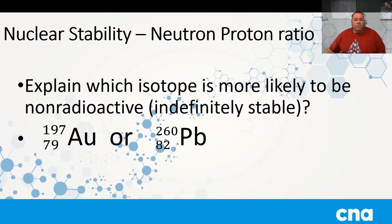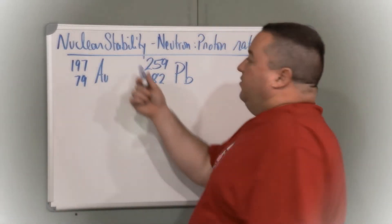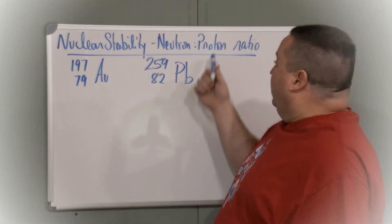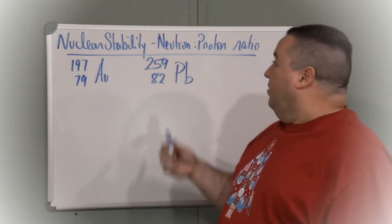This is another question about nuclear stability. Explain which isotope is more likely to be non-radioactive or indefinitely stable: gold 197 or lead 260? This is another example about nuclear stability, but this one we're talking about the neutron to proton ratio.